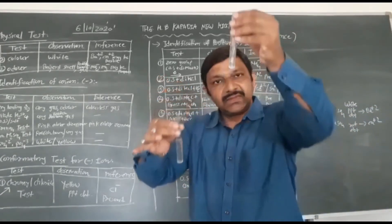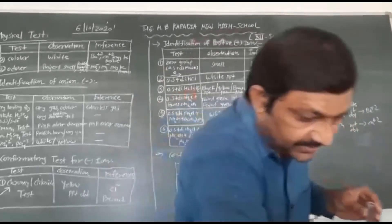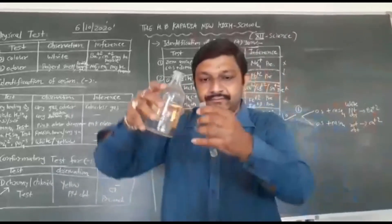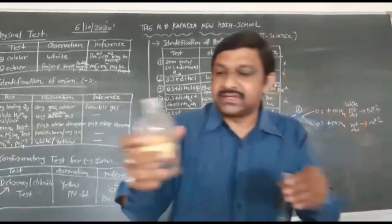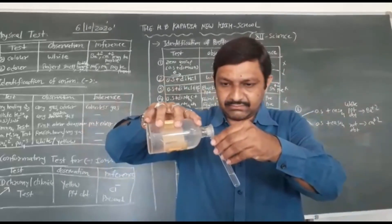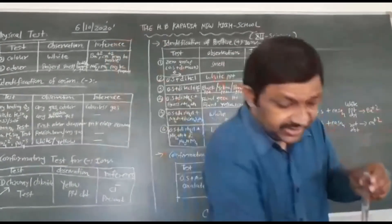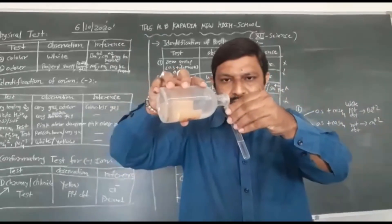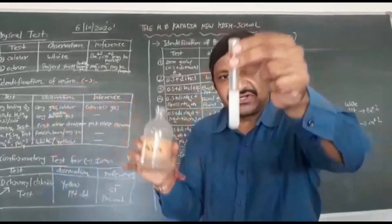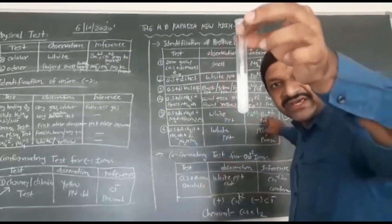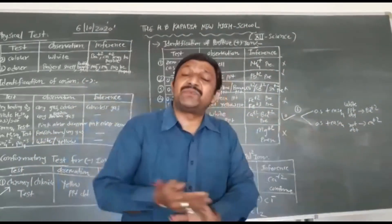We will perform the Ba/Ca group test directly. Here is your original solution. Add NH₄Cl — here is your NH₄Cl — then NH₄OH, and finally (NH₄)₂CO₃. A white PPT is obtained. Your Ba/Ca group is present. Now we will divide Ba or Ca.